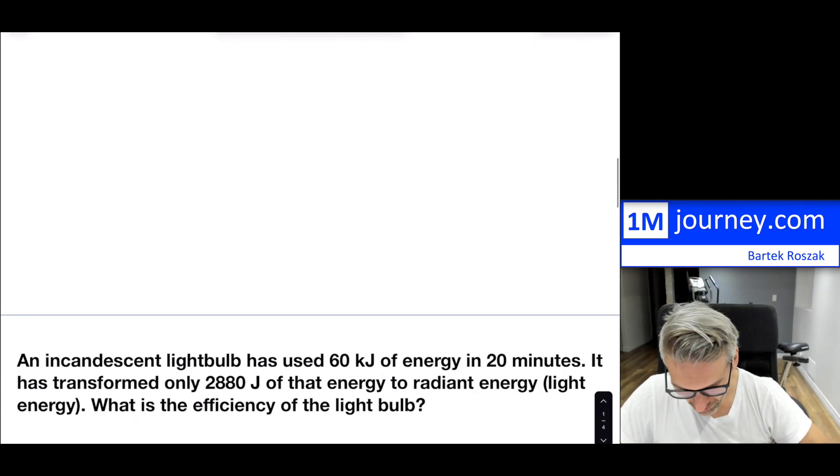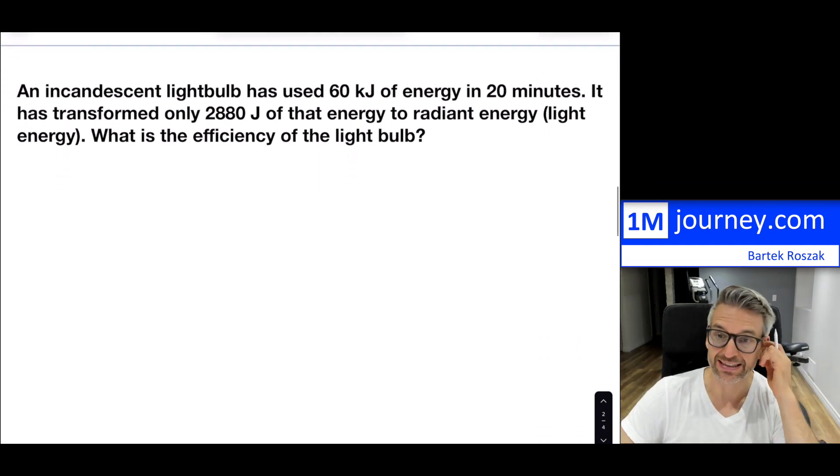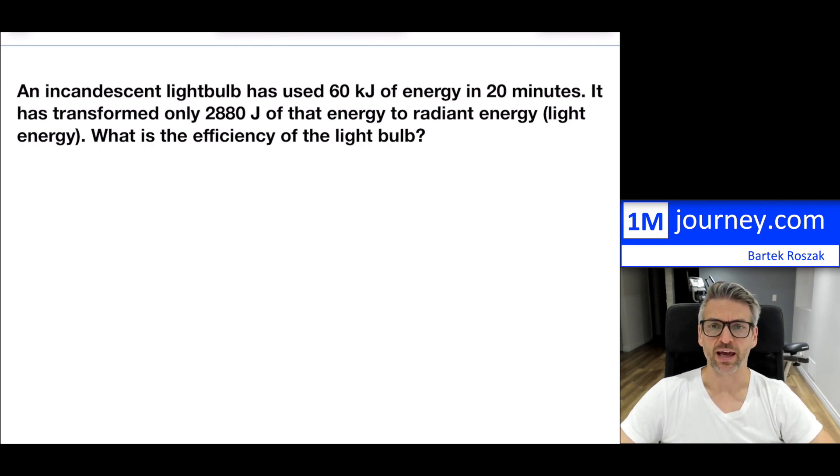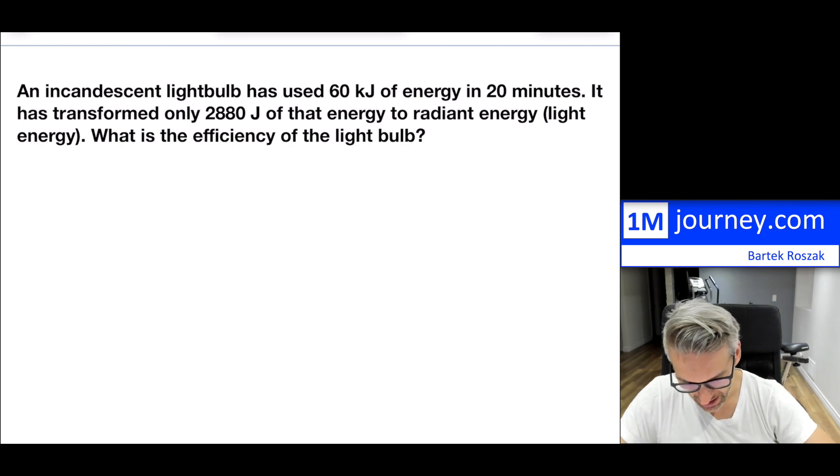So let's take a look at a few examples so that you can see exactly what I'm referring to. So here is our first example, and this is an incandescent light bulb. Now, an incandescent light bulb is actually not very efficient, and you'll see that right here. And it has been around now for probably about 100 and maybe 50 years even.